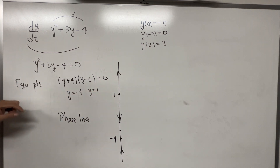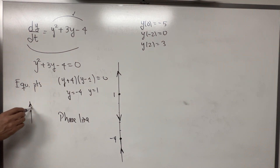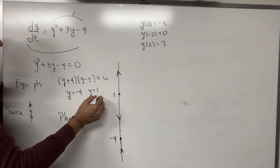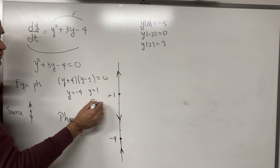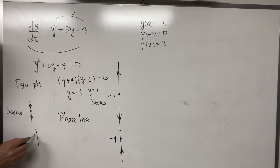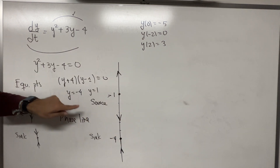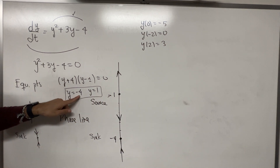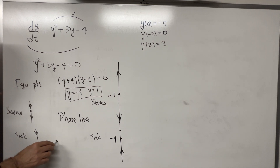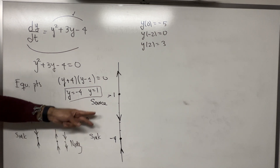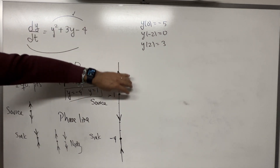We want to classify the equilibrium points. If we have an equilibrium point where the arrows on both sides go away from it, that is called a source — so y = 1 is a source. If the arrows on both sides go toward the equilibrium point, it is called a sink — so y = -4 is a sink. The other possibility is when two arrows go in the same direction; that equilibrium point is called a node. Here we don't have any nodes.